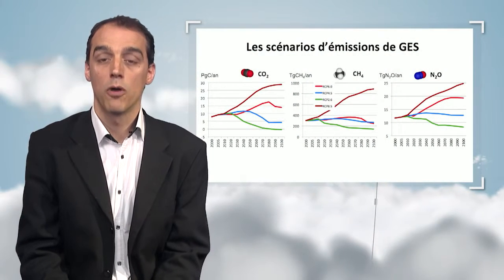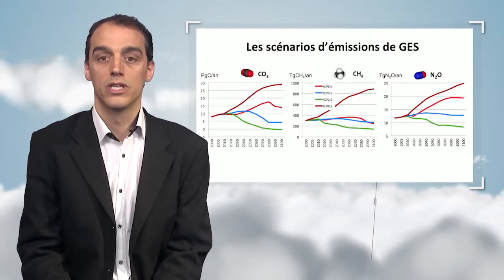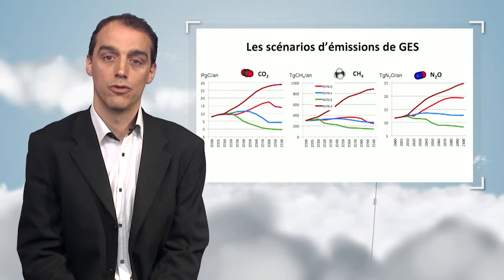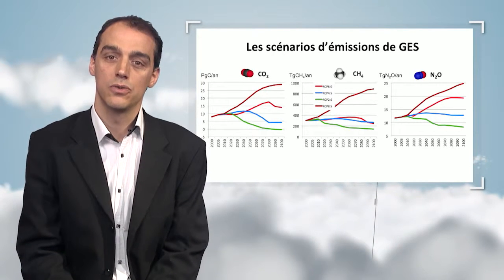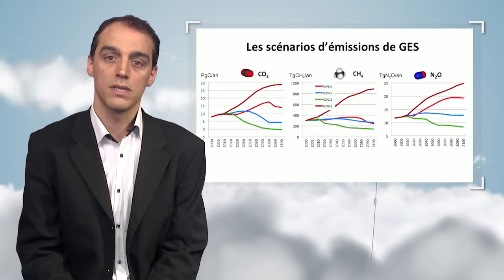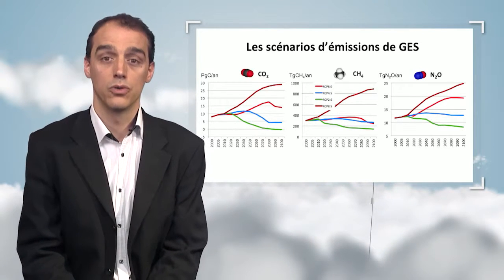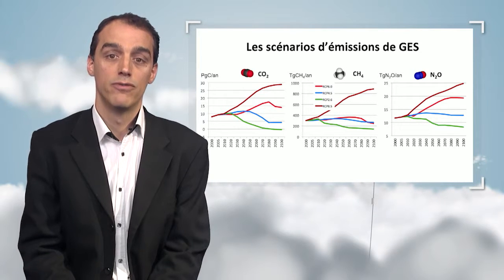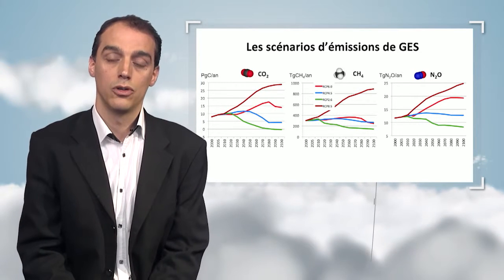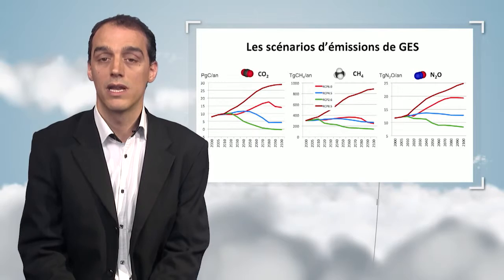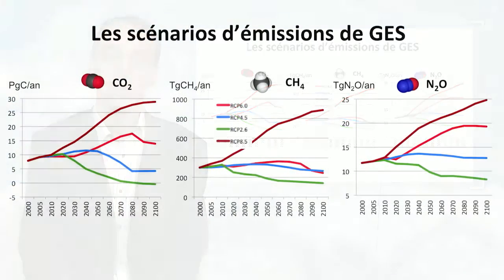On the first slide, you see why we can continue looking at greenhouse effect gases. We have the emissions of the three main gases for the next few decades: carbon dioxide on the left-hand side, which may go from a few dozens of billions of tons of carbon to much greater figures, methane in the center, and nitrous oxide emissions on the right-hand side.